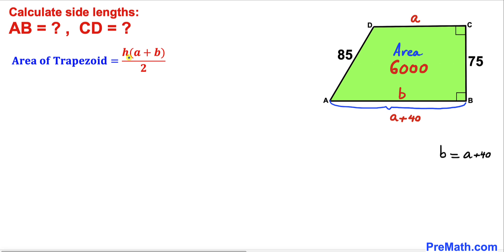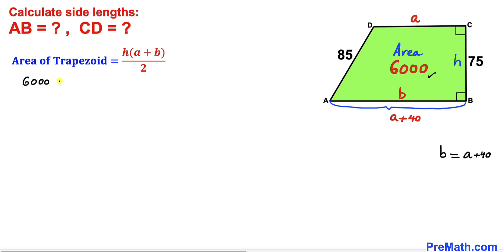Now let's recall the area formula for a trapezoid: Area = h × (a + b) / 2. In our case, the height h is 75, the parallel sides are a and b which equals a + 40, and the area is 6,000 square units. So: 6000 = 75 × (a + (a + 40)) / 2.